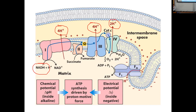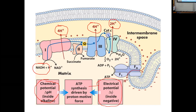This pumping represents both a concentration difference and a charge difference. The chemical concentration difference can be thought of as a difference in pH, a difference in proton concentration. The difference in charge represents a membrane potential — we have more positive charge on the outer aspect of the inner membrane versus the matrix side of the inner membrane.